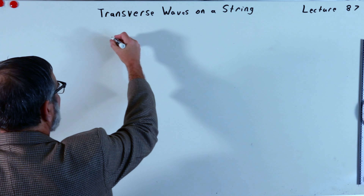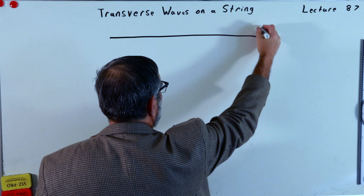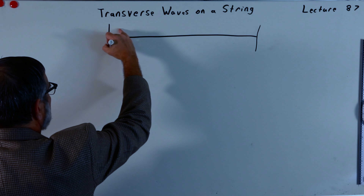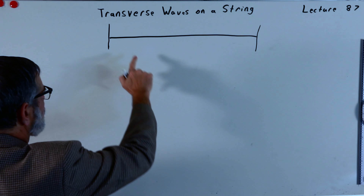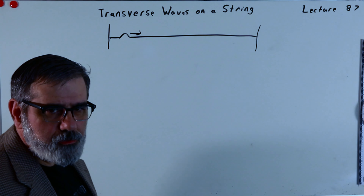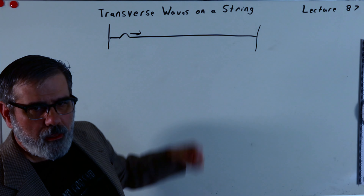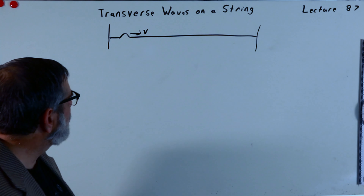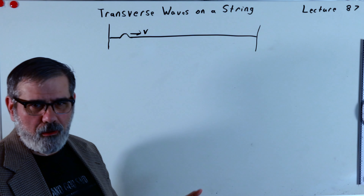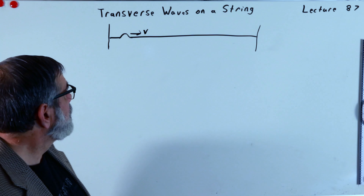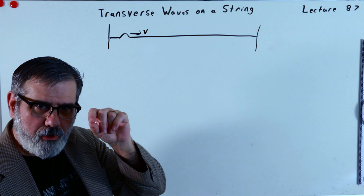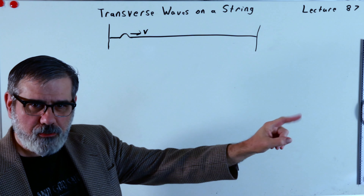Here's the setup. If I have a string tied to a wall very far away, and it's tethered here as well, if I were to pluck this string, I could get a little wave bump, or wave pulse, traveling in this direction with speed V. This is not the same as when I play the guitar — those are standing waves, and we'll talk about standing waves a bit later. This is a traveling wave. If you just wiggle the string up and down briefly, you get a little jerk on it and it'll send a little pulse down the string.